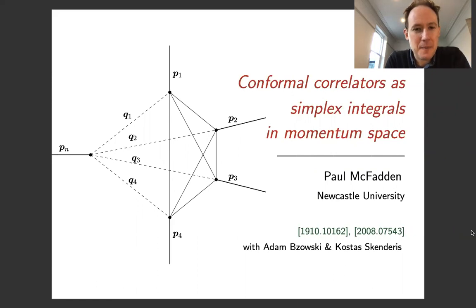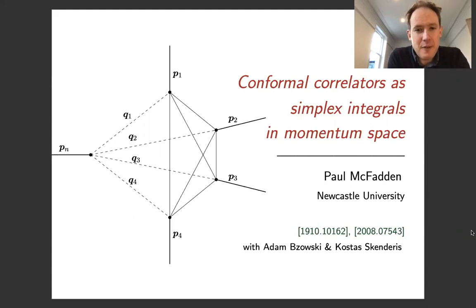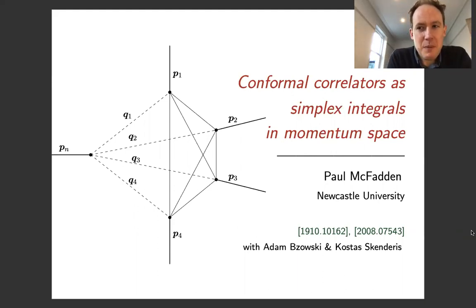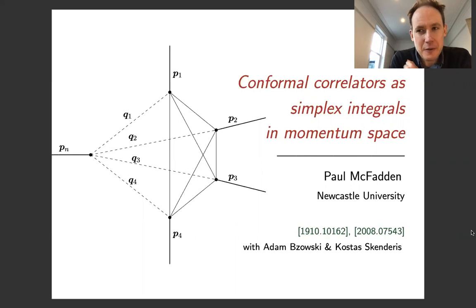Hi everybody, thank you for joining me and thank you to Enrico and Guy for organising this meeting. My name is Paul McFadden and I'd like to tell you about some new work on conformal field theory in momentum space with my collaborators Adam Bozovsky and Costa Scanderis. We have a new result that I'm very excited about: you can write the general n-point correlation function in momentum space as a generalised Feynman integral with a topology of a simplex. In this talk I'd like to tell you about this new result and some of the ways I think it could be useful for early universe cosmology.